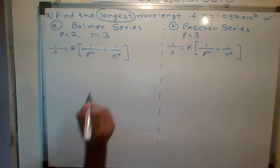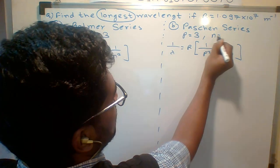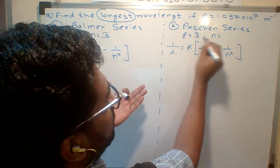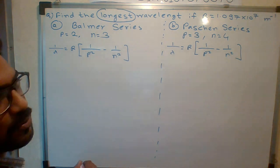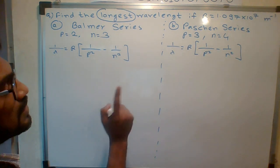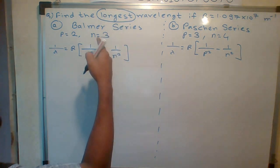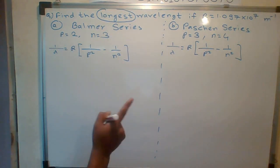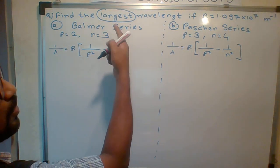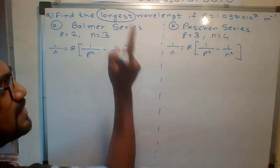For Paschen series, students, the longest wavelength should be next to that p. For longest wavelength, the n value is just next to that p. For smallest wavelength, n is always infinity.